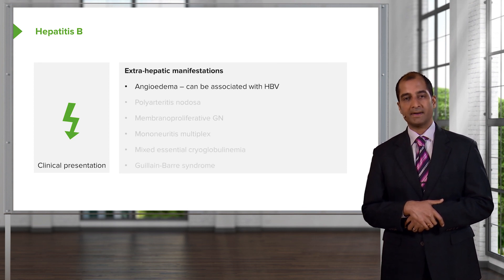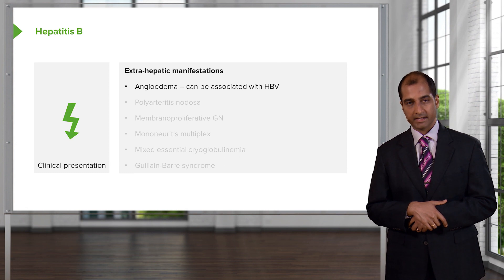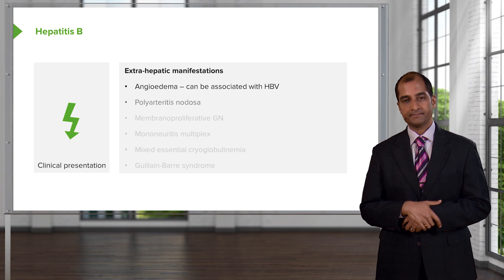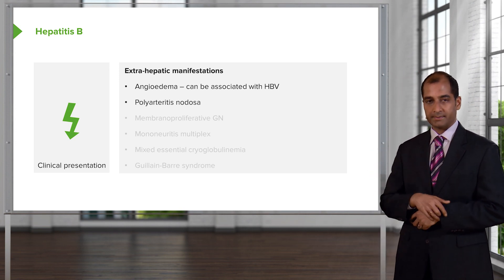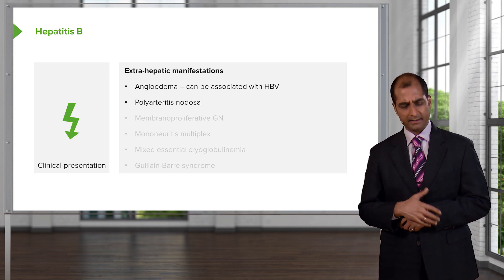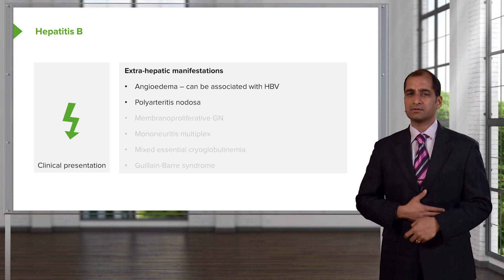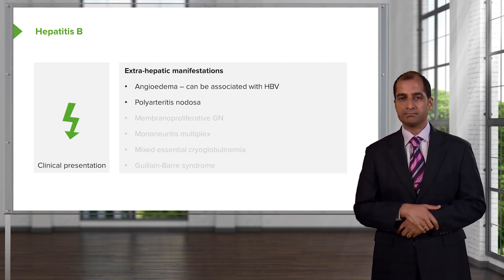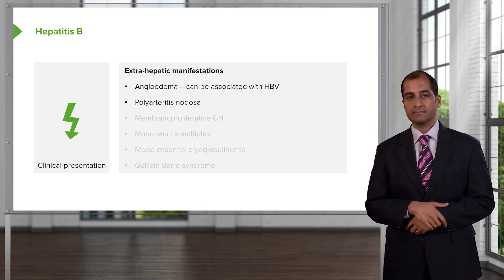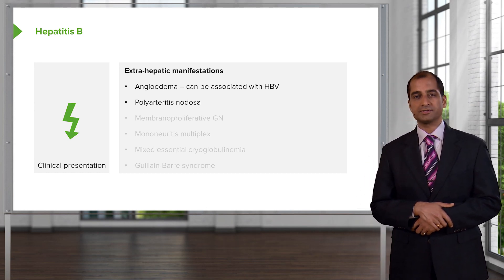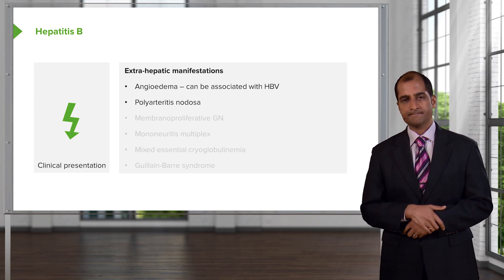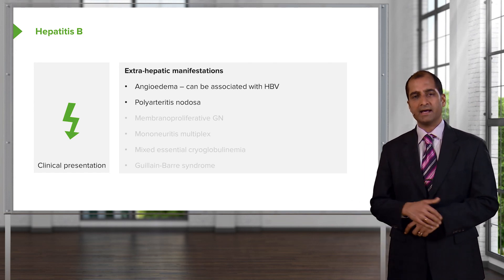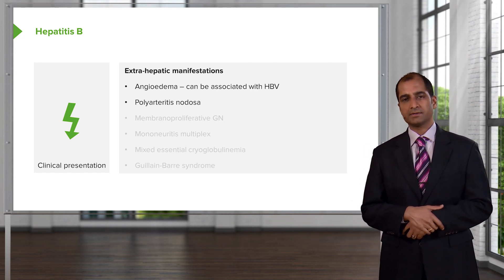Moving on to extrahepatic manifestations of hepatitis B. Pay attention to the following. About 30% of patients may come in complaining of abdominal pain, and you may also notice blood in the urine. Upon serology, you find an increase in ALT. So the liver is involved, and you're finding abdominal pain and hematuria.